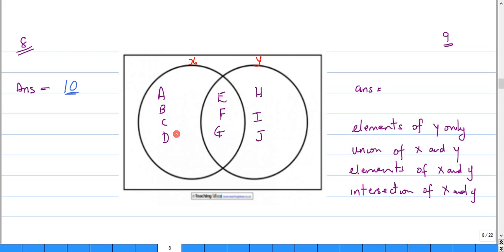and g would be common to x and y. So our answer for number nine is the intersection of x and y.